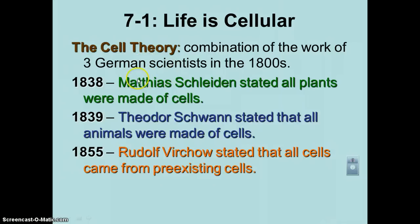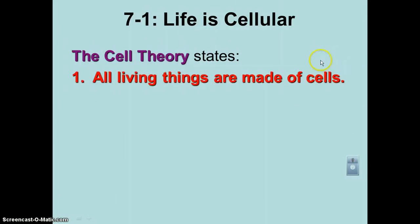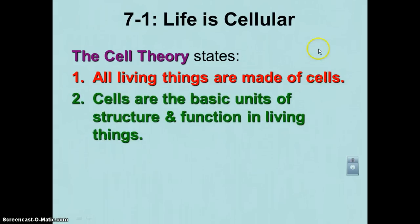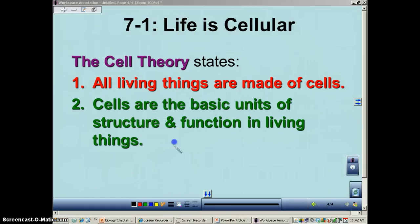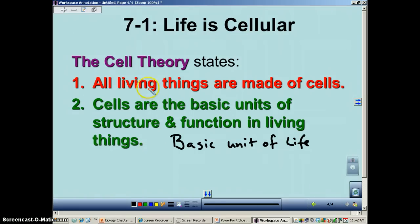Getting back to the cell theory — if you take the work of Schleiden, Schwann, and Virchow and condense it, you get the cell theory, which has three parts. The first part: all living things are made up of cells. The second part: cells are the basic unit of structure and function of living things — or simply, the cell is the basic unit of life. Items one and two are basically a combination of Schleiden and Schwann: if all plants and all animals are made of cells, it's safe to assume all living things are. And in fact, protists, fungi, and bacteria are also made of cells.